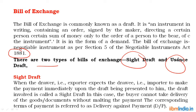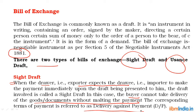There are two types of bill of exchange. The first is the sight draft: when the exporter expects the importer to make payment immediately upon the draft being presented to him, it is called a sight draft. In this case, the buyer cannot take delivery of the goods or documents without making the payment. The corresponding term of payment is called 'delivery against payment' — essentially cash on delivery.